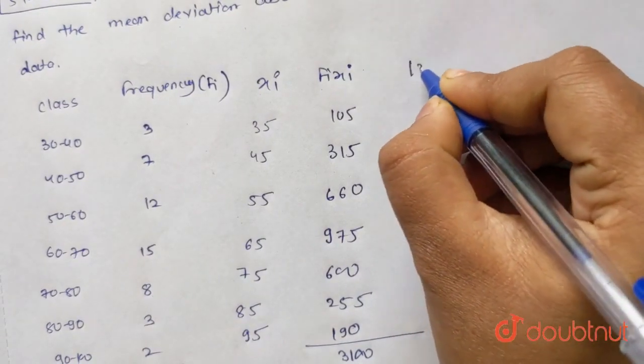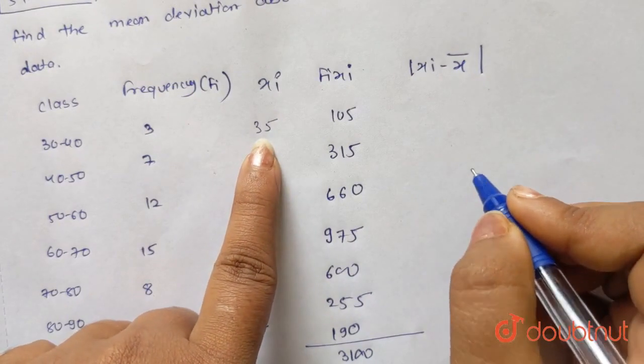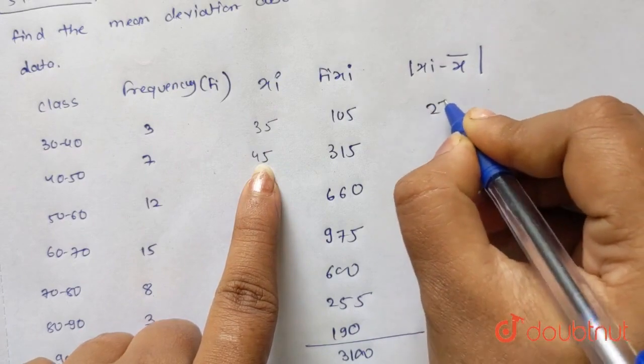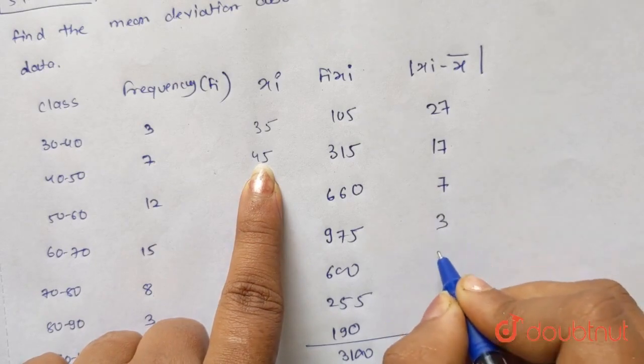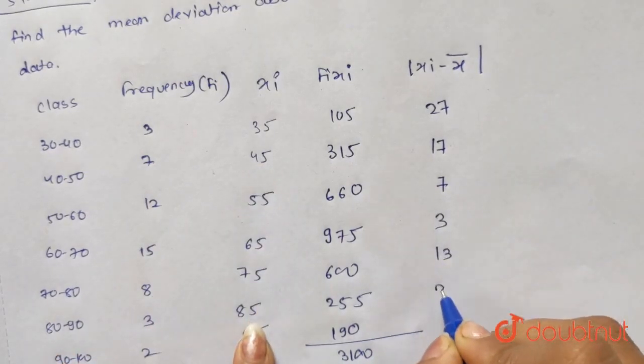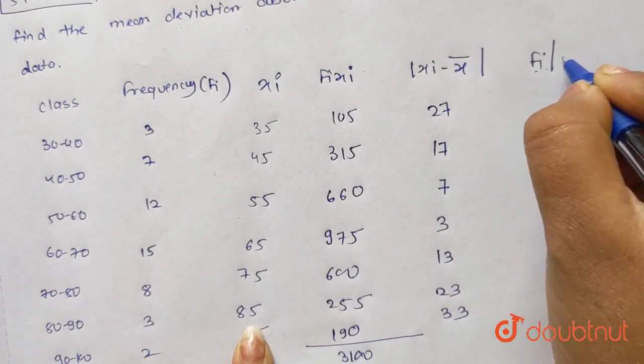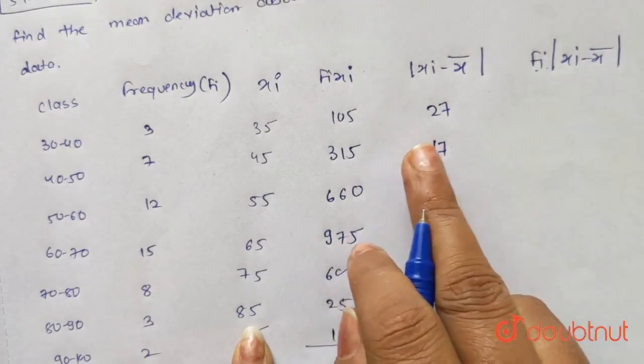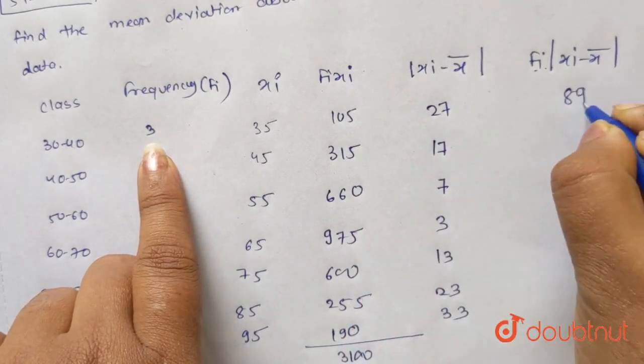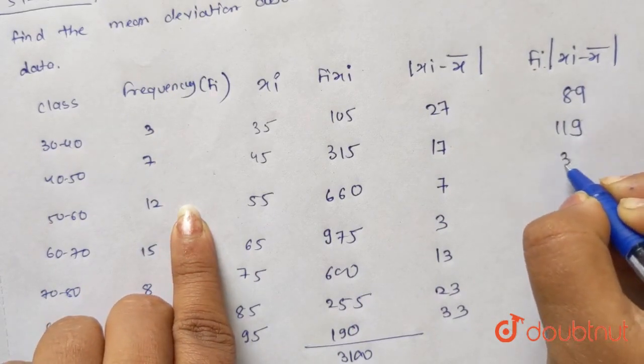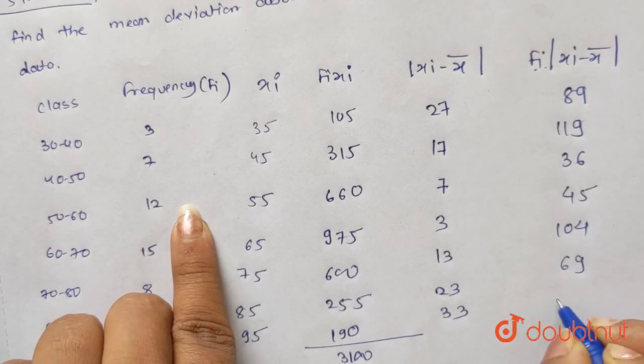Here we will make XI minus x bar. This is your XI and x bar we get 62. So 35 minus 62 is 27, then 17, then 7, 3, 13, 23, and here it is 33. Now if this is FI into mod of XI minus x bar, you multiply the fifth column and the second column. This is 89, 119, 36, 45, 104, 69, and here it will be 66.